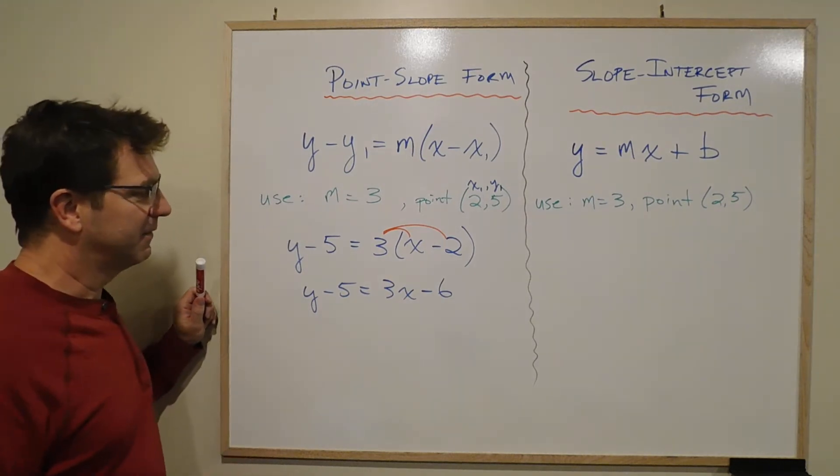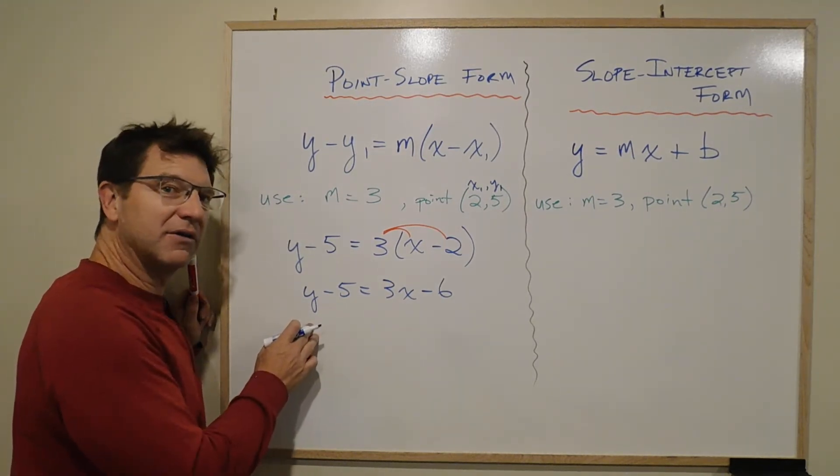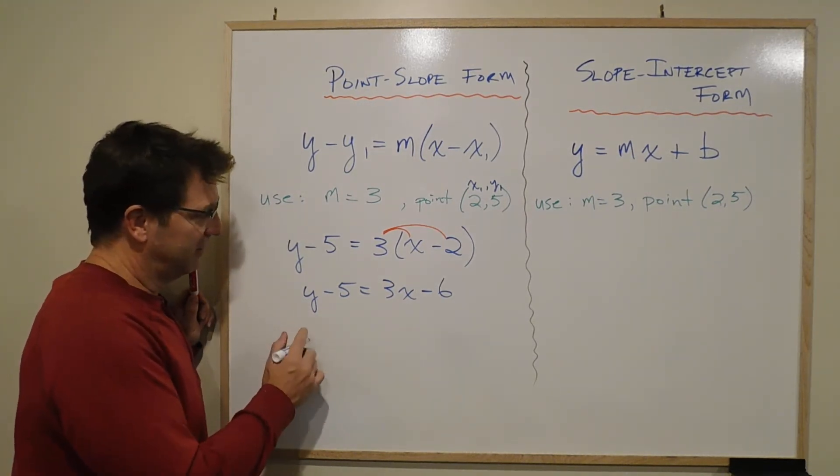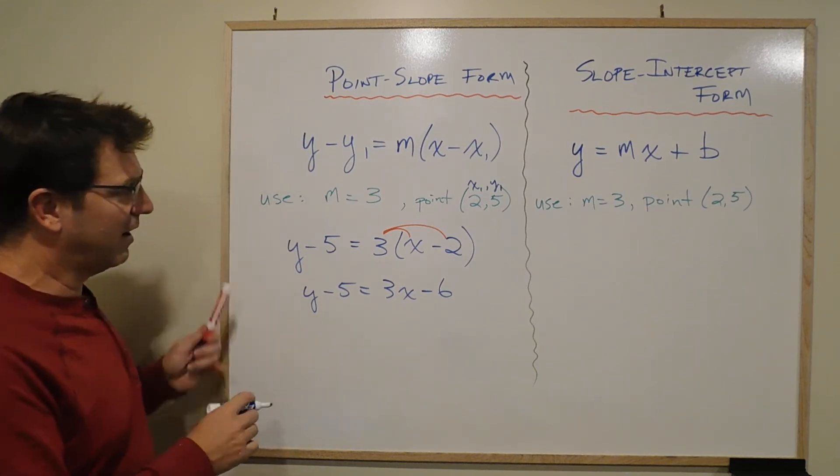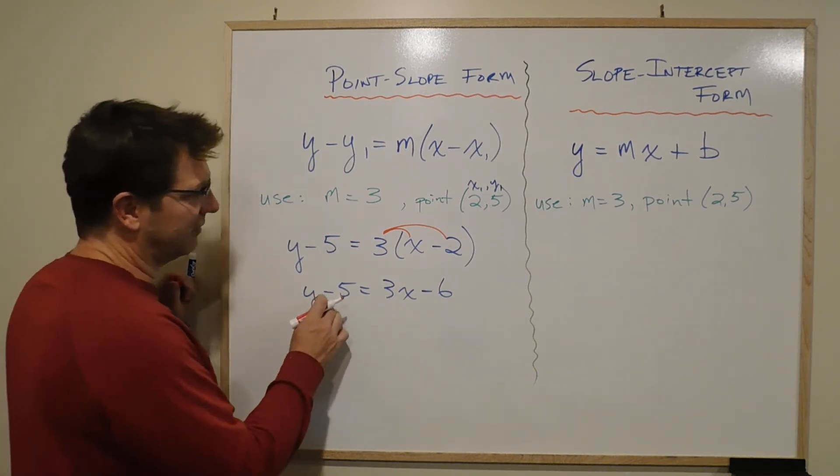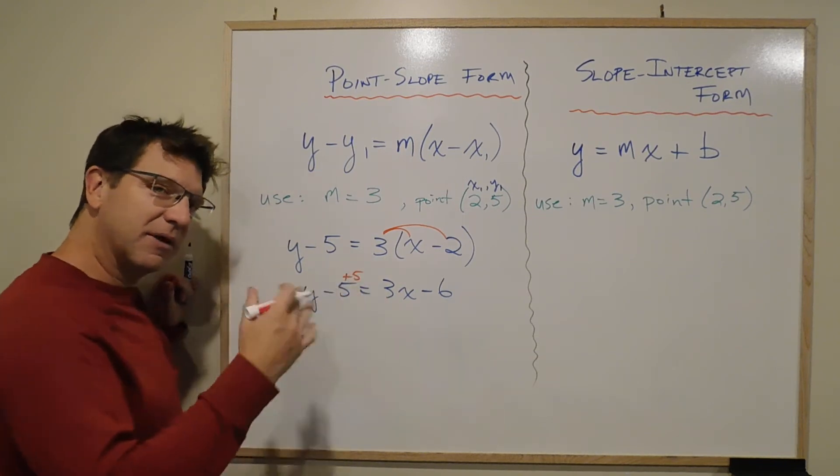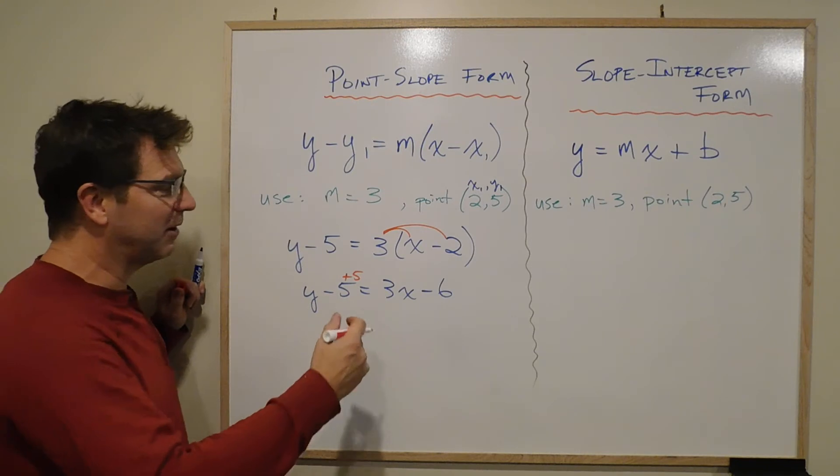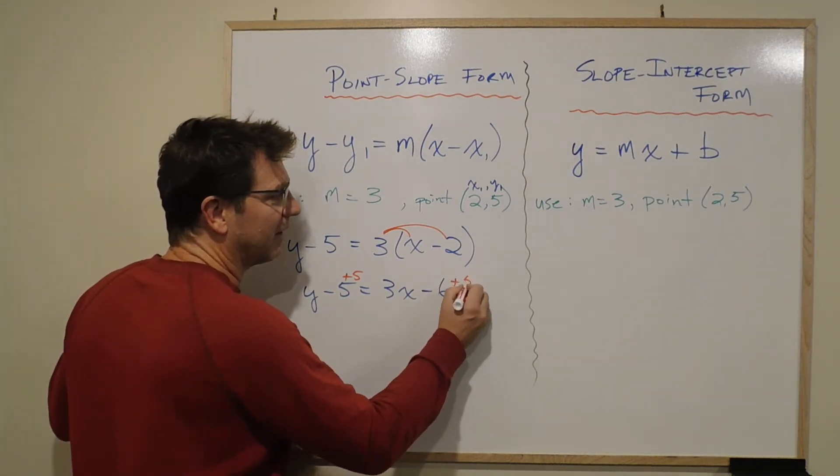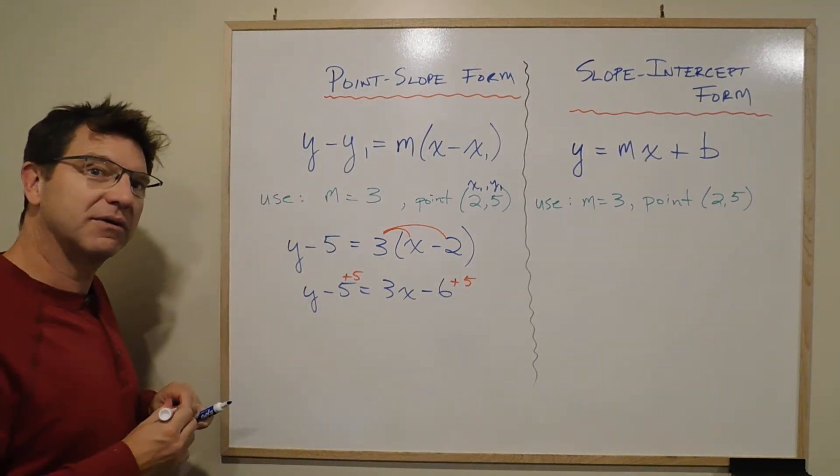3 times minus 2 is minus 6, right? Now, what we want to do is get y by itself, right? So to get y equals, well, we have a minus 5 here. We don't want it. So we're going to add 5 on this side. But then to maintain balance, remember the equal sign. You always have to maintain balance. We also have to add 5 on this side.